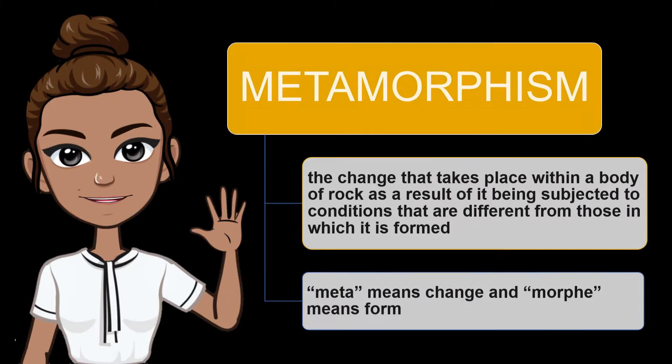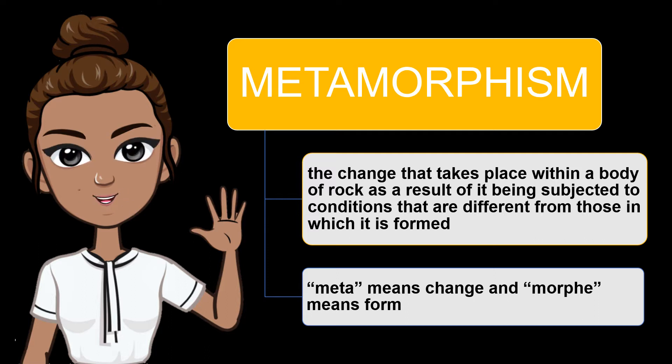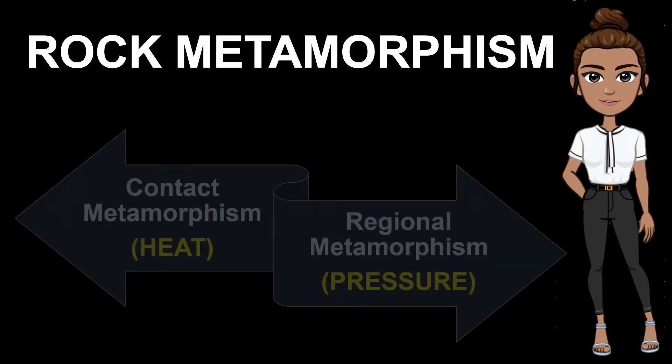The original rock can either be sedimentary, igneous, or even another metamorphic rock. Any kind of rock can change into a new rock. This is what we call metamorphism. Metamorphism is the change that takes place within a body of rock as a result of it being subjected to conditions that are different from those in which it was formed. It is from the Greek word meta, meaning change, and morphe, meaning form. From extreme heat and pressure, the original rock is changed into a completely new rock, called a metamorphic rock.